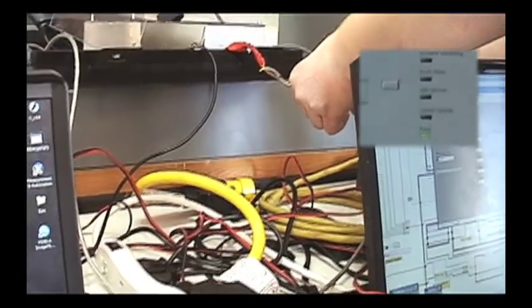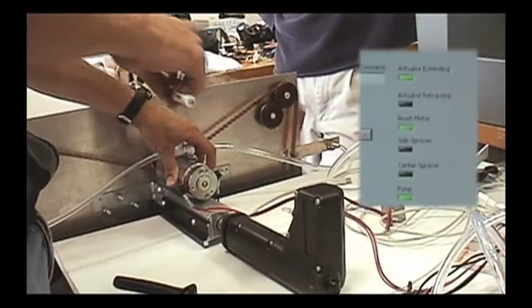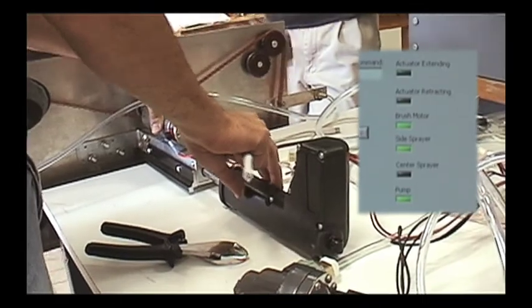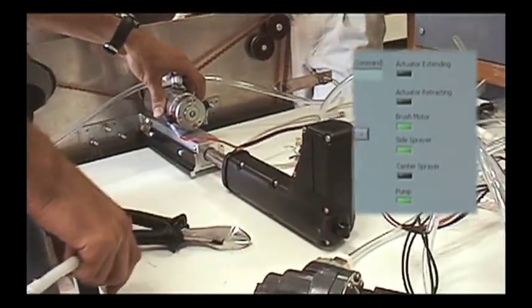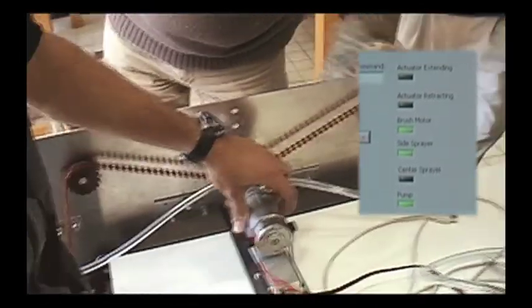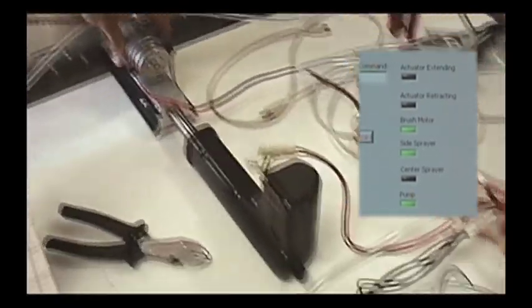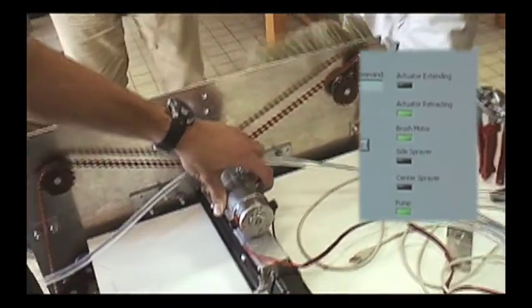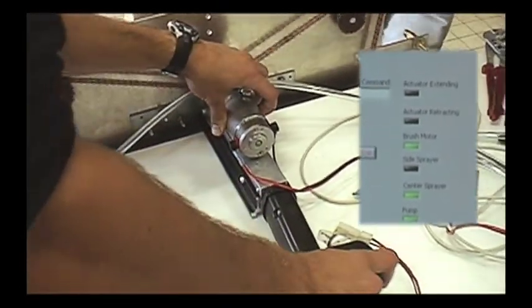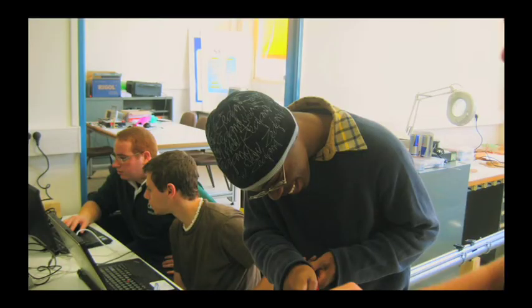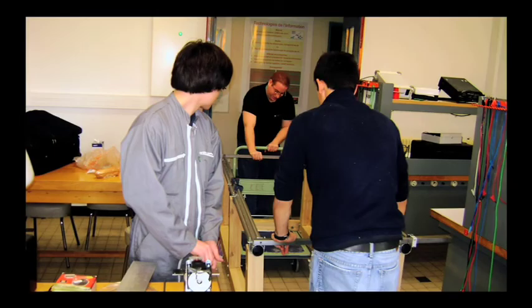The first item we tested was the control system integration. The American and French components were controlled by separate controllers and separate codes which communicated to a serial port by sending a simple character to indicate when a sequence begins or ends. For example, once the simulated vertical location is reached, the French controller sends the American controller the letter A, signaling that it is time to begin the sequence for a cleaning pass.